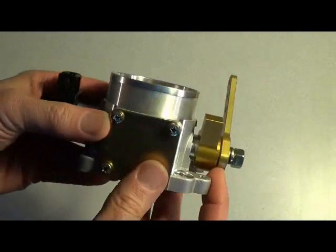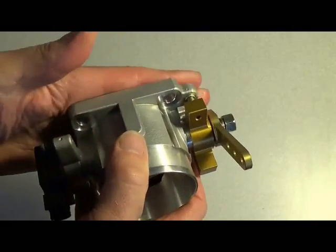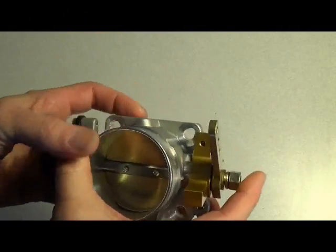This is our 60mm throttle body, direct bolt-on for Lycoming, so you don't need any adapter plate here. This is a modified production piece, try to keep the cost down a bit.